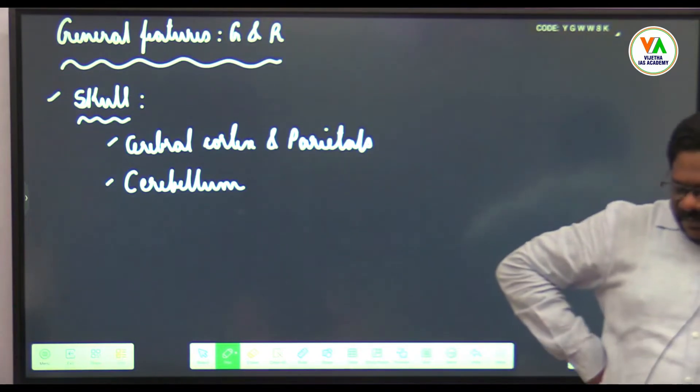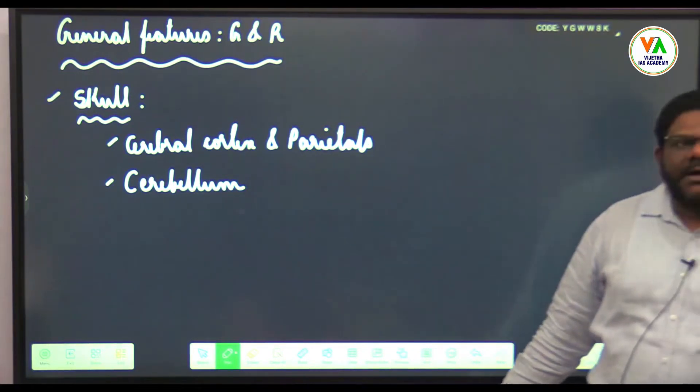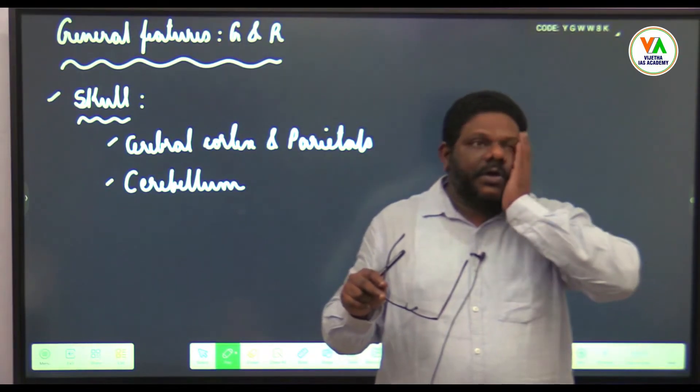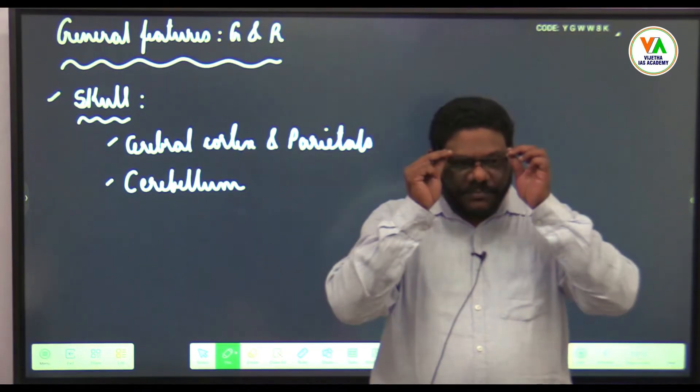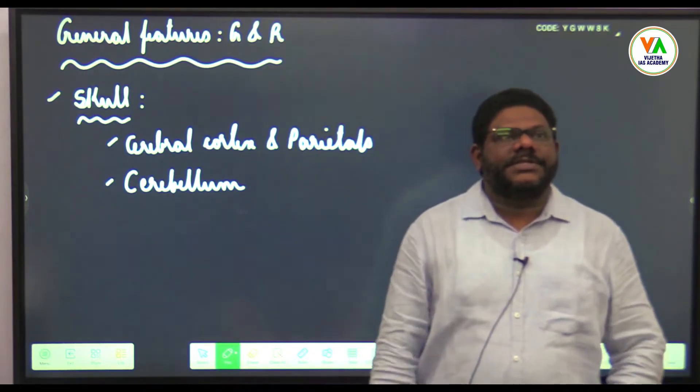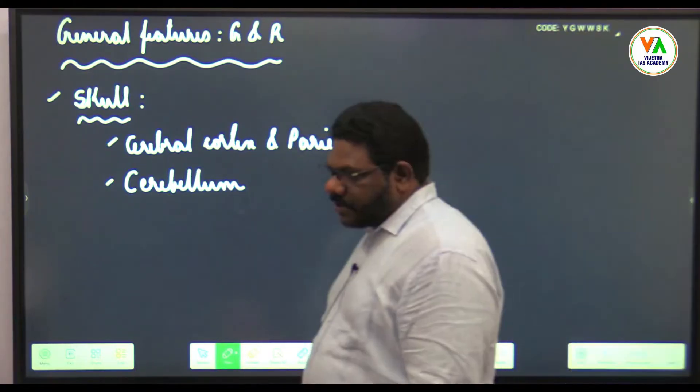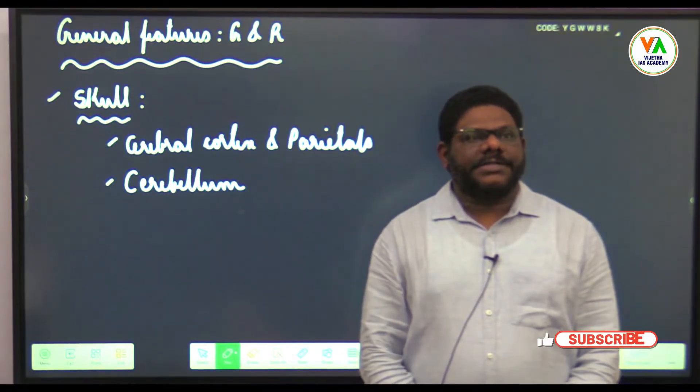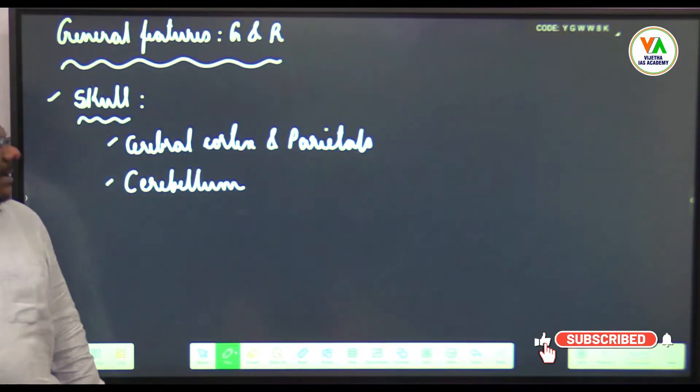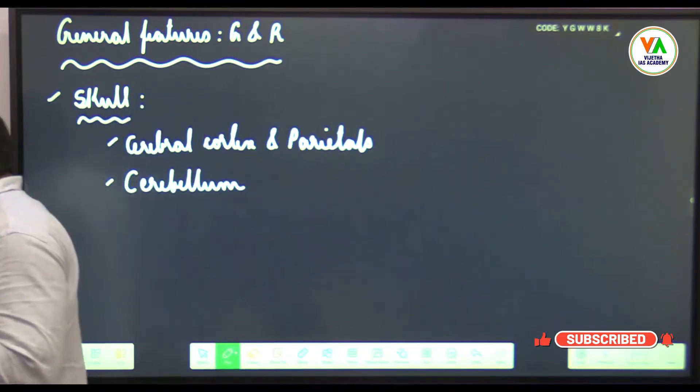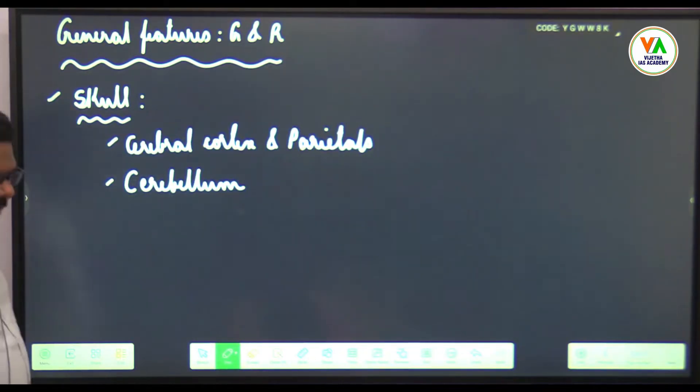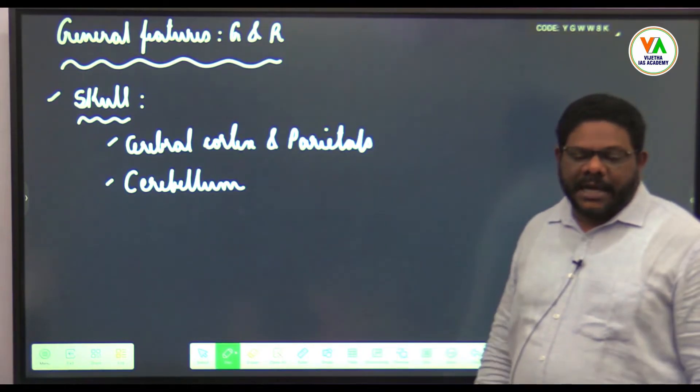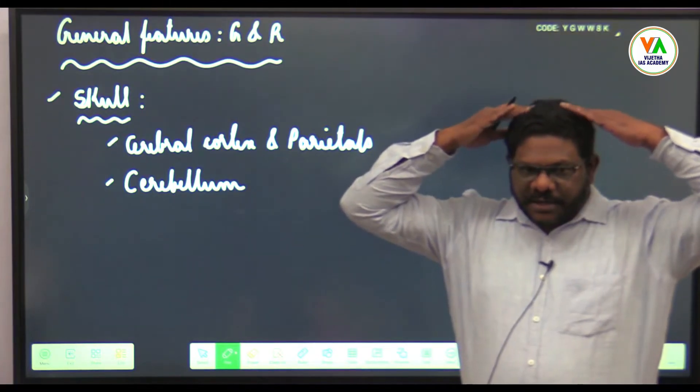Please write: brain is well developed. Cerebral cortex and parietals are enlarged—these areas are related to communication and speech, so Australopithecines might have had some form of symbolic communication. Cerebellum is well developed, indicating fine muscle movements, manipulation by hands, and balance.